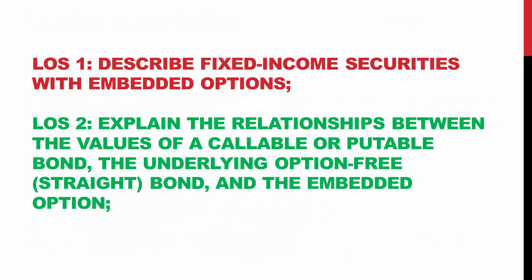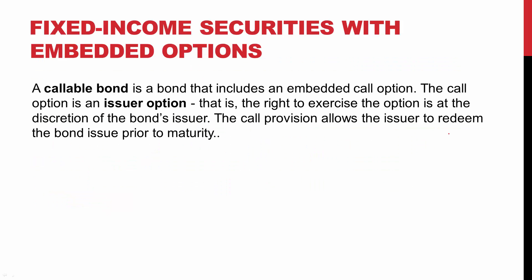The first learning outcome expects you to describe fixed income securities with embedded options. The second learning outcome expects you to explain the relationships between the values of a callable or putable bond, the underlying option-free bond (the straight bond), and the embedded option. A callable bond is a bond that includes an embedded call option — an issuer option, meaning the right to exercise is at the discretion of the bond's issuer. The call provision allows the issuer to redeem the bond prior to its maturity.